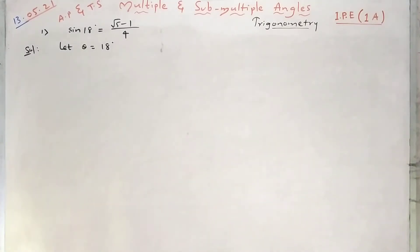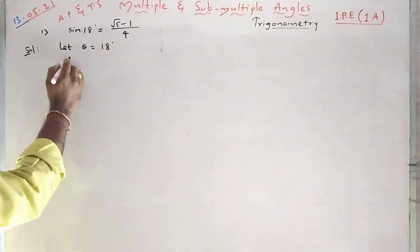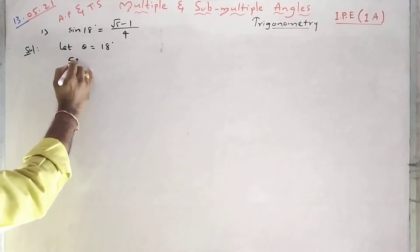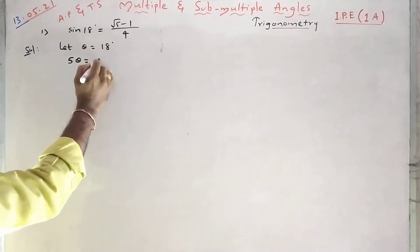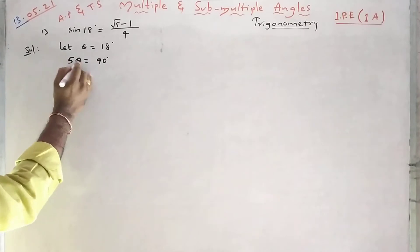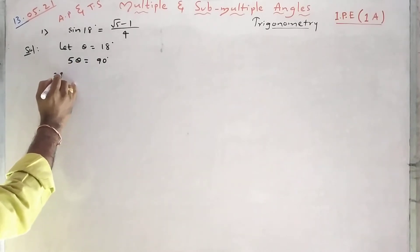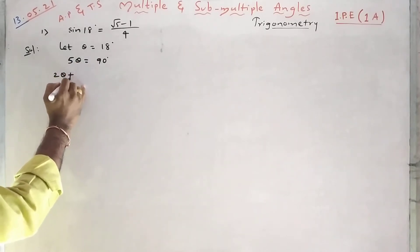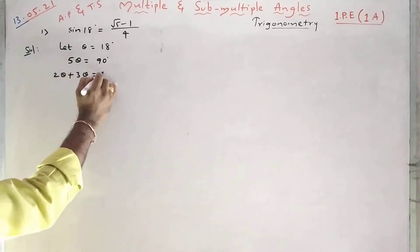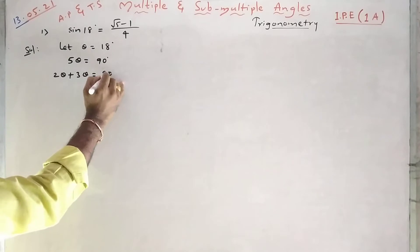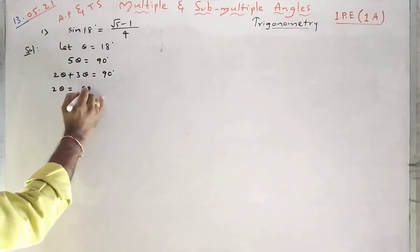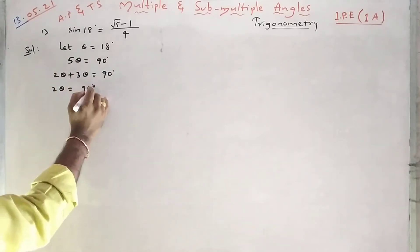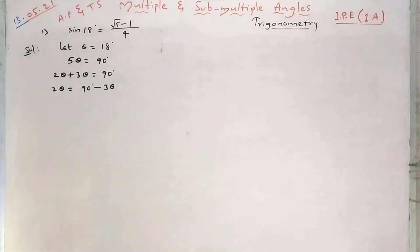Let theta equal to 18. Multiply both sides by 5, then 5 times 18 is 90 degrees. So 5 theta equals 90. I am writing this as 2 theta plus 3 theta equal to 90. Therefore, 2 theta is equal to 90 minus 3 theta.